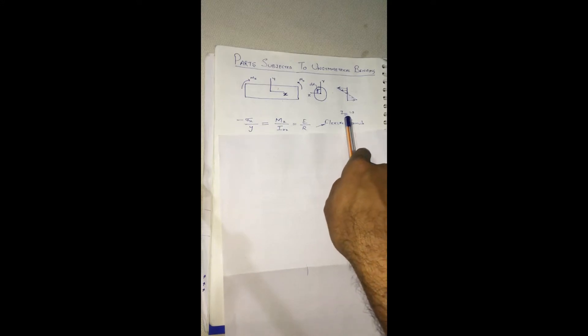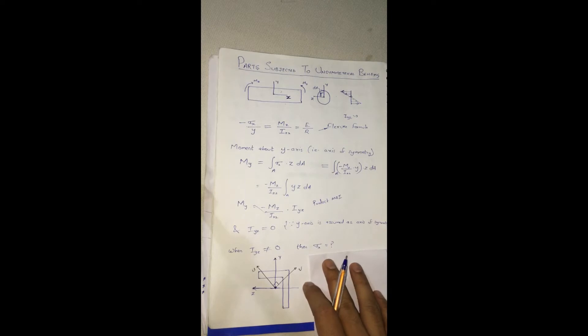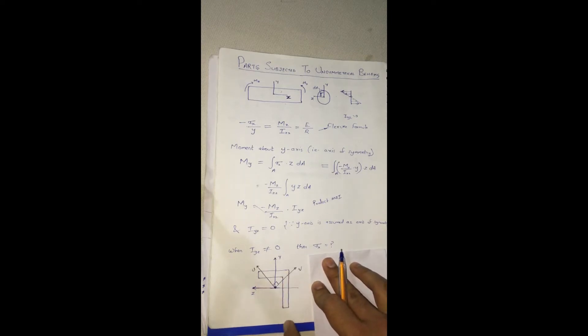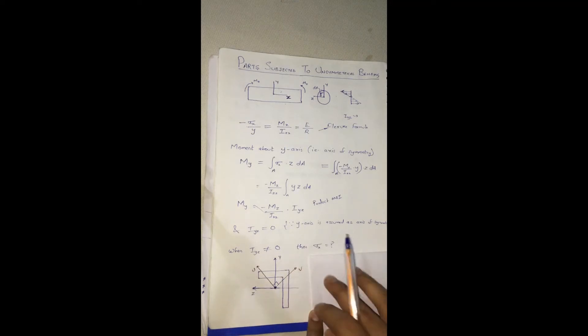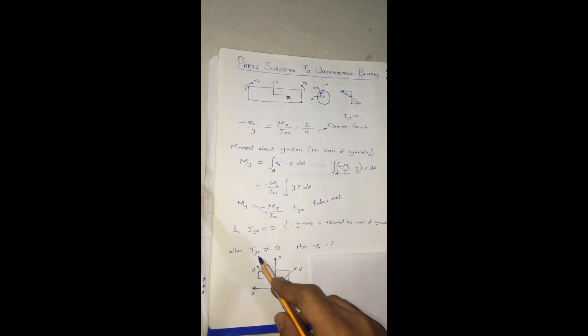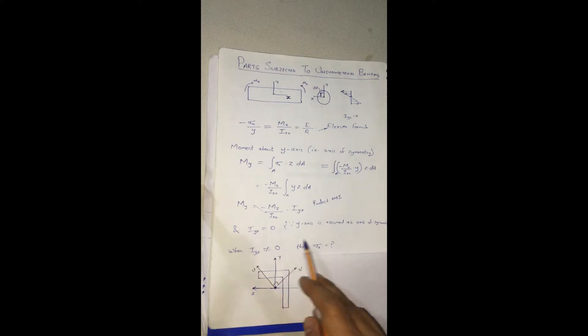What happens in cases where the product moment of inertia is not equal to zero, or in sections where there is no plane of symmetry — such as this L-section or angle section? Here the CG lies outside the body, and Iyz is not equal to zero. Then how will we determine the stress distribution?